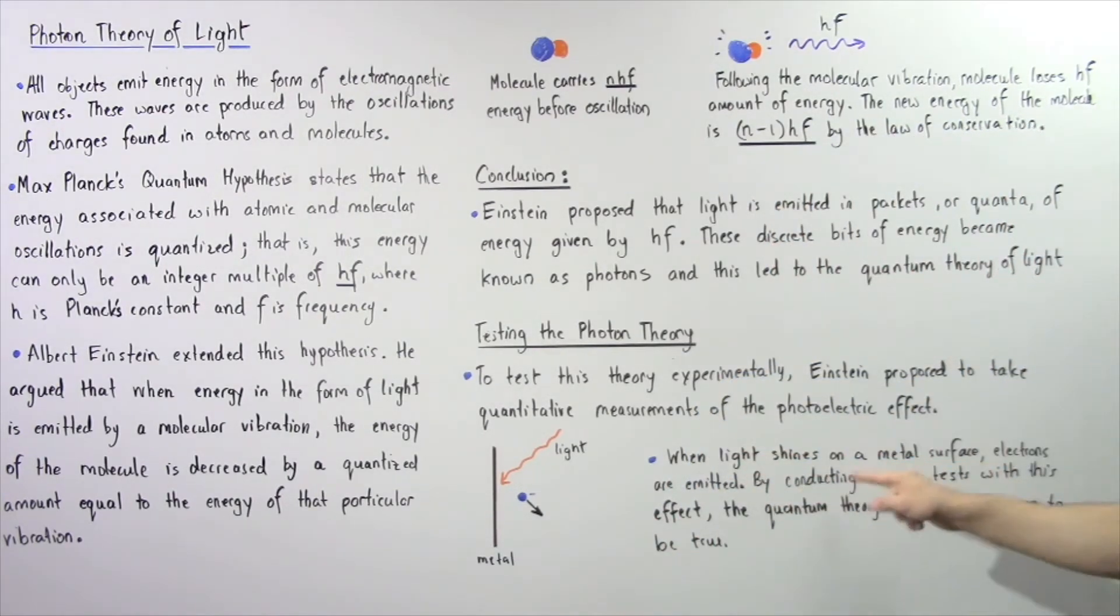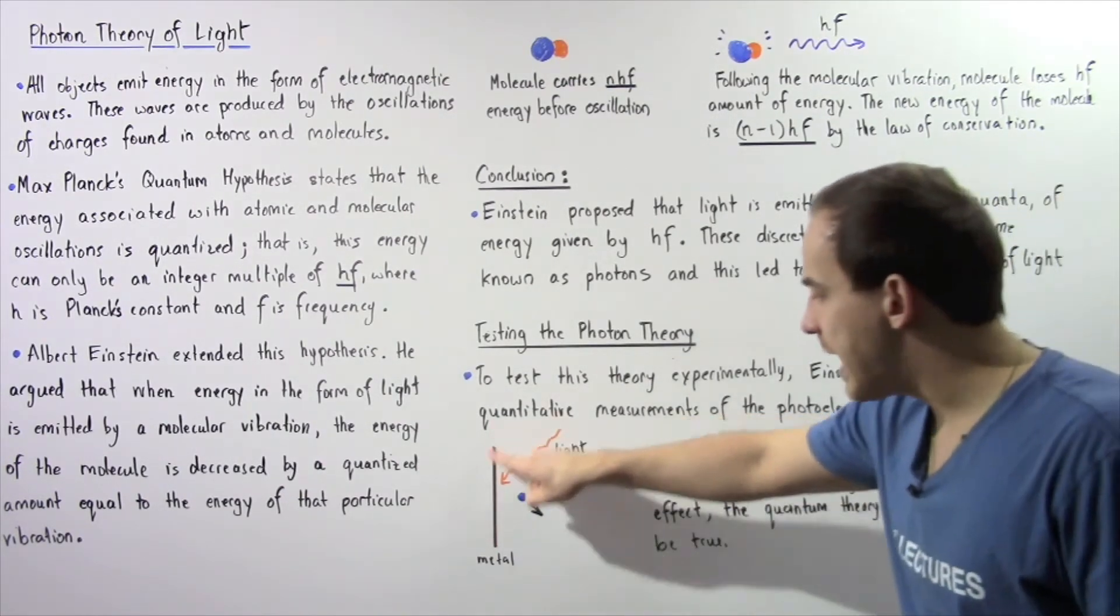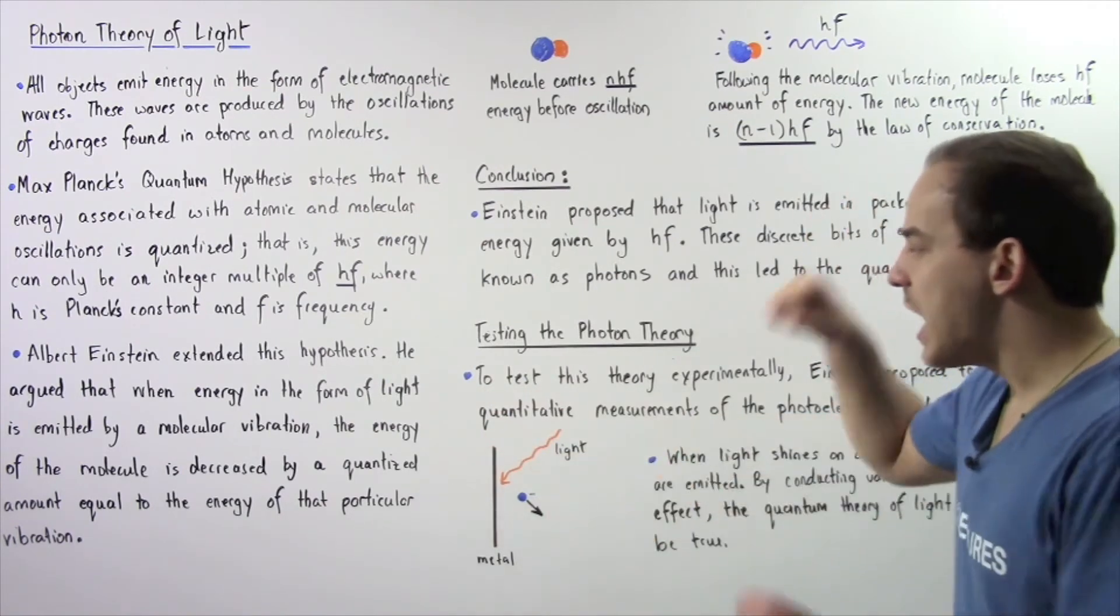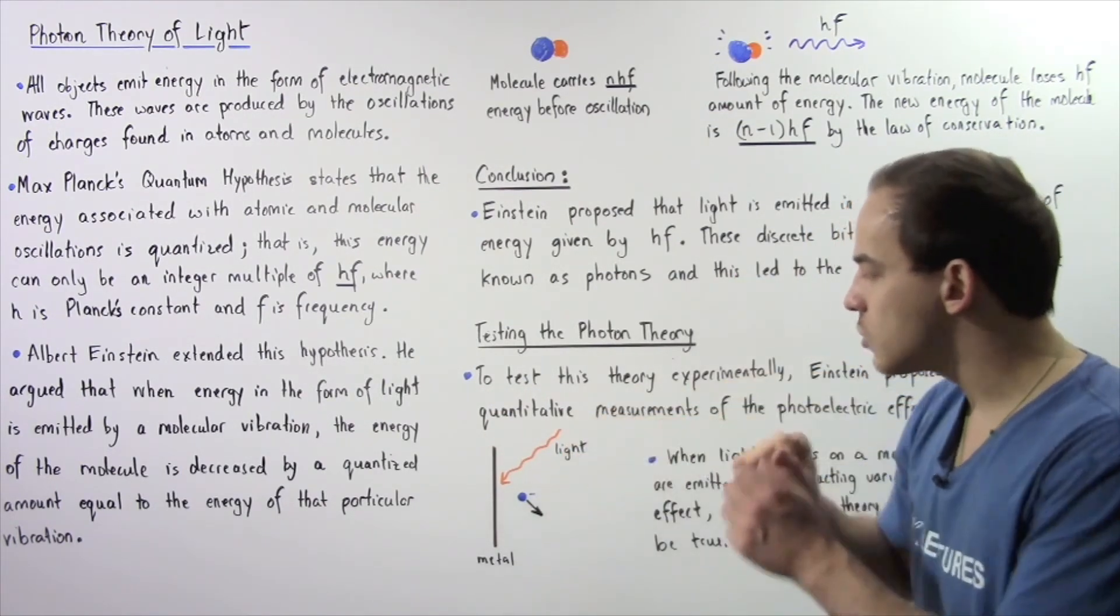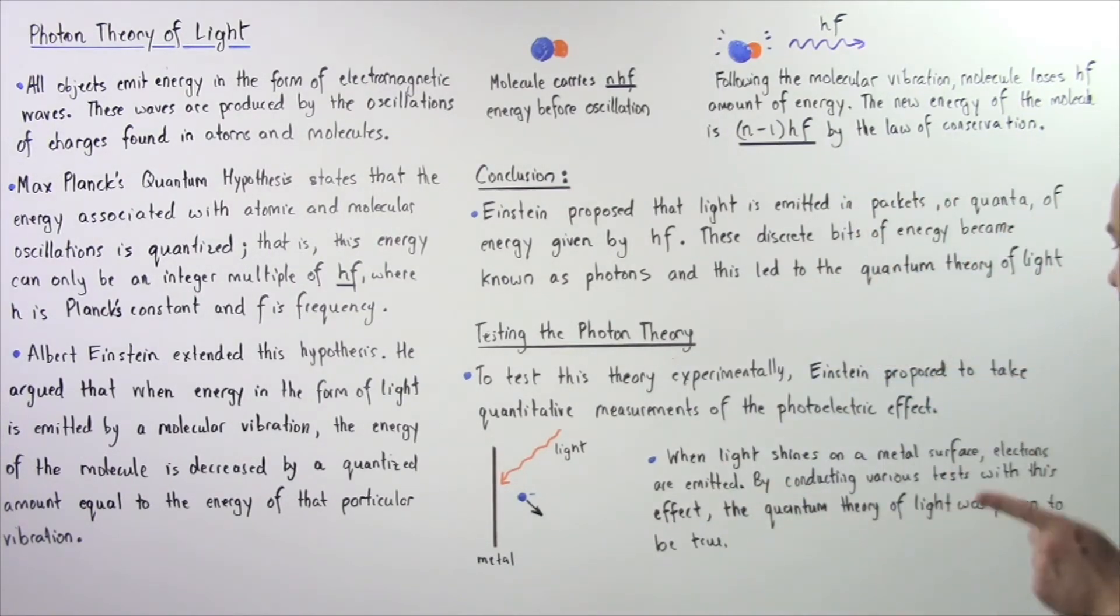Basically, when light shines on a metal surface, electrons are emitted from that surface. So if we have the following metal surface and we shine light on that surface, electrons will be emitted. By conducting various experiments with the photoelectric effect, the quantum theory of light was proven to be true.